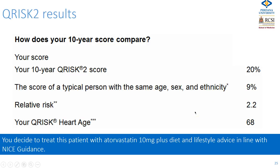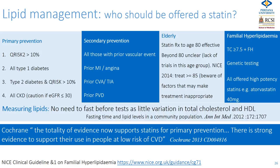This patient needs a statin and is prescribed atorvastatin 10 mg plus diet and lifestyle advice, in accordance with NICE guidance. Who should be offered a statin? All those on Q-Risk 2 with a risk over 10%, all type 1 and type 2 diabetes patients with Q-Risk over 10%, and all those with chronic kidney disease.